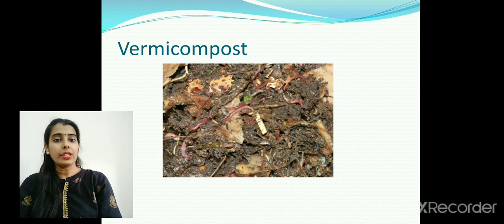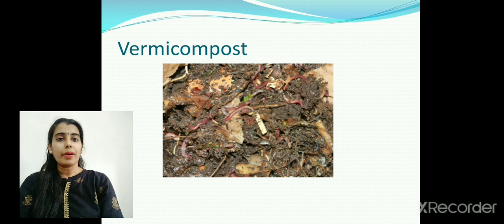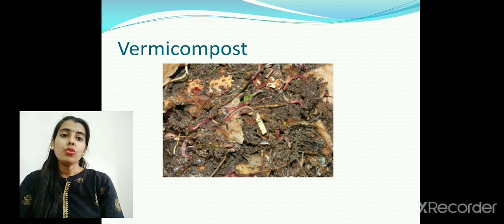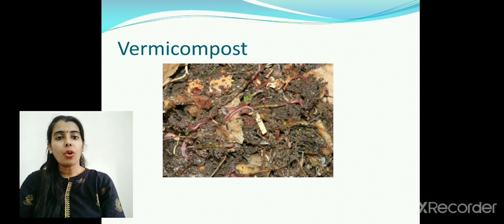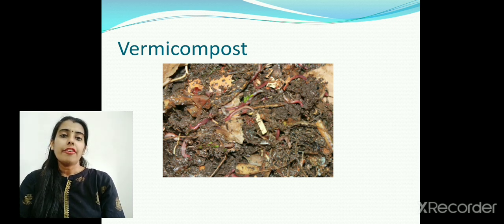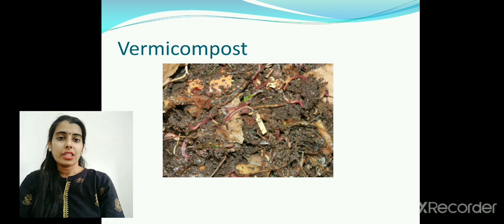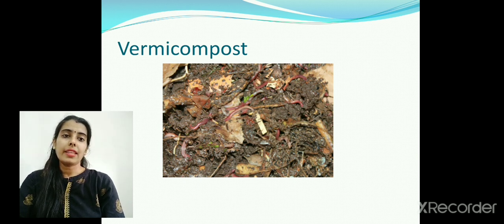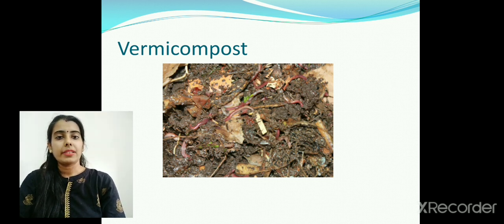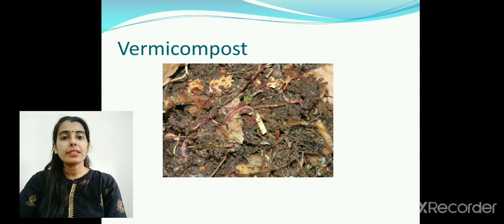Now, what to do with biodegradable waste? Let's talk about how to reuse and recycle it. It can be recycled to form manure or compost, which is a very rich source of nutrients for plants. This can be done by creating a small pit in your garden area, putting in kitchen waste — collecting all the vegetable peels, kitchen waste, or garden waste — and allowing it to decompose for one to two months.